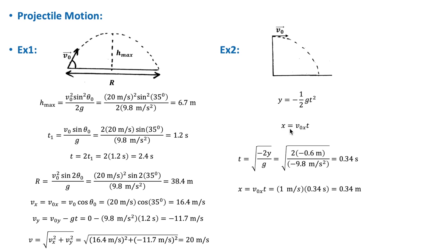We also have x = v₀ₓ · t. The time it takes the ball to reach the ground is t = √(−2y / g). With y = −0.6 m, the total time of flight is 0.34 seconds, and the horizontal distance covered is x = v₀ₓ · t = 1 × 0.34 = 0.34 meters.